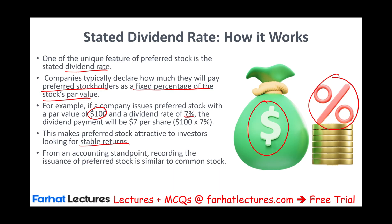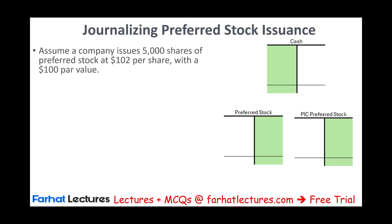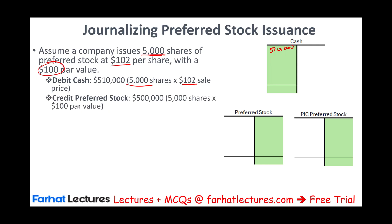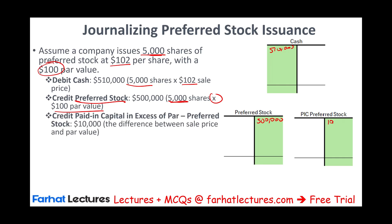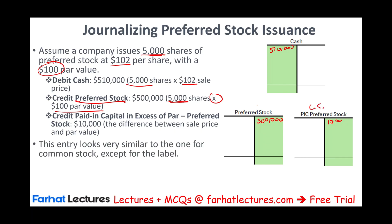From an accounting standpoint, recording the issuance of preferred stock is basically the same as common stock. For example: a company sold 5,000 shares of preferred stock at $102 with a par value of $100. How much cash will they receive? They sold 5,000 shares at $102, so they receive $510,000 — debit cash $510,000. We credit preferred stock for the number of shares times the par value, which is $500,000. Anything left — $10,000 — goes to paid-in capital preferred stock, just like we have paid-in capital common stock.